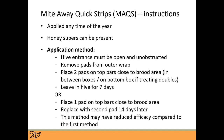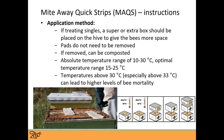An alternative method listed on the label is to use one pad at a time — place one pad on the top bars close to the brood area, leave it for two weeks, then replace it with the second pad. The label notes this method may have reduced efficacy. So if mite levels are low and you want to knock them back a bit without risking queens, the one-pad method is okay. If mite levels are really high and you need to get them down quickly, go with the two-pad method — it's stronger but has higher efficacy.